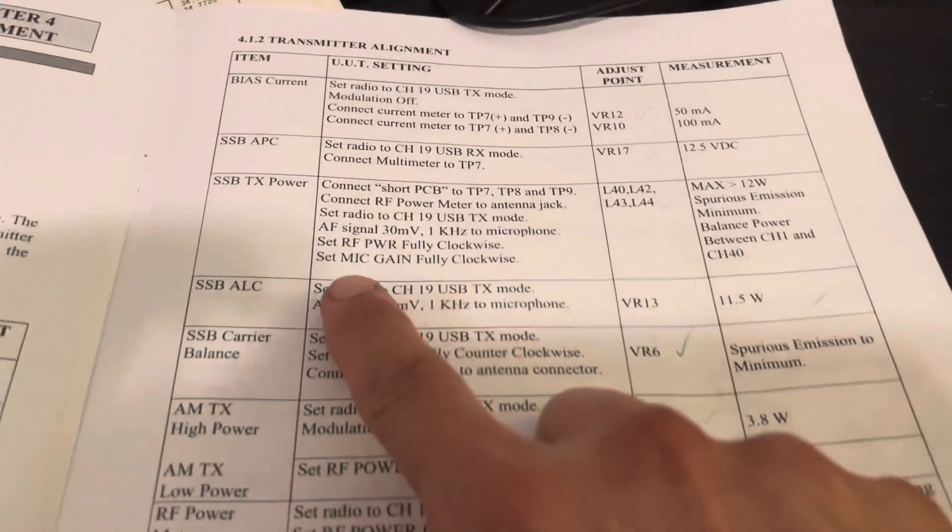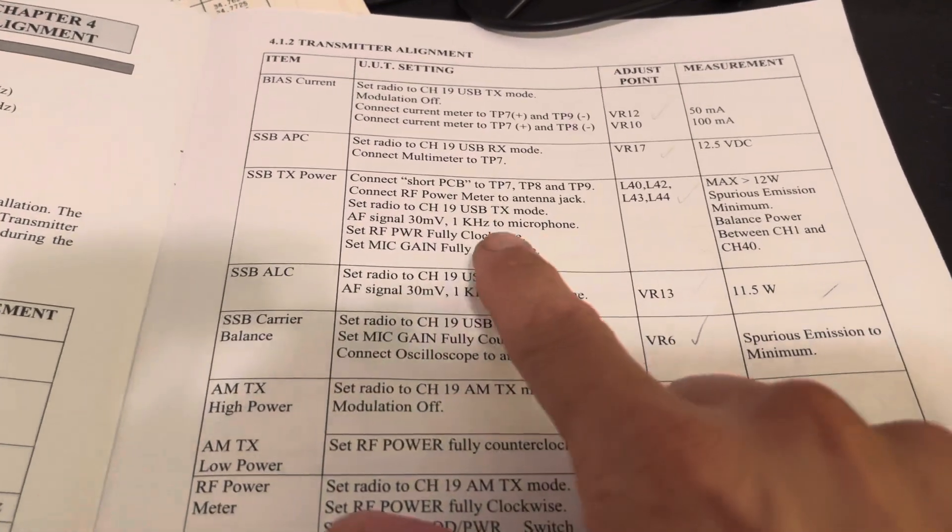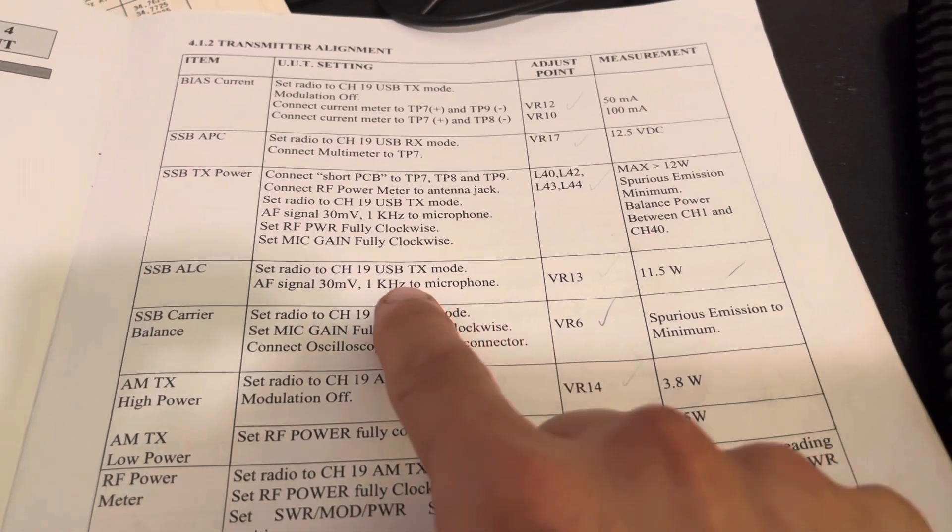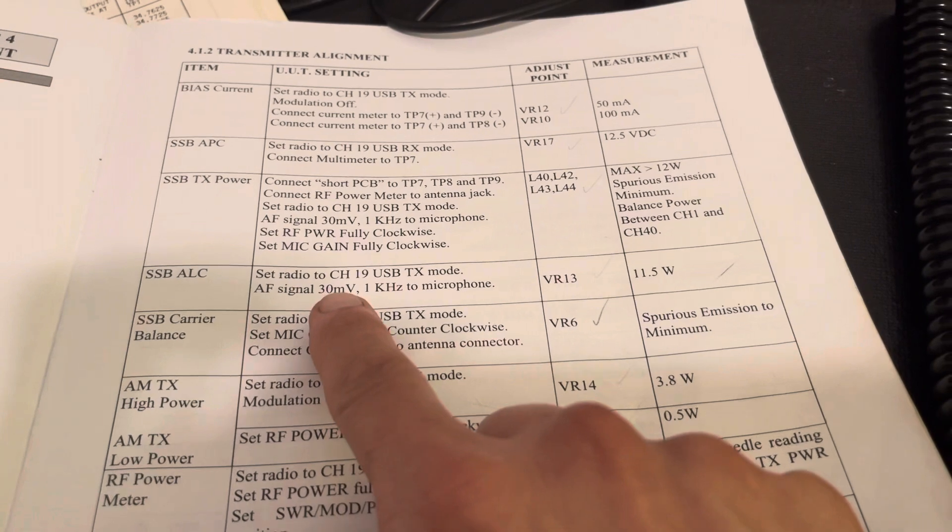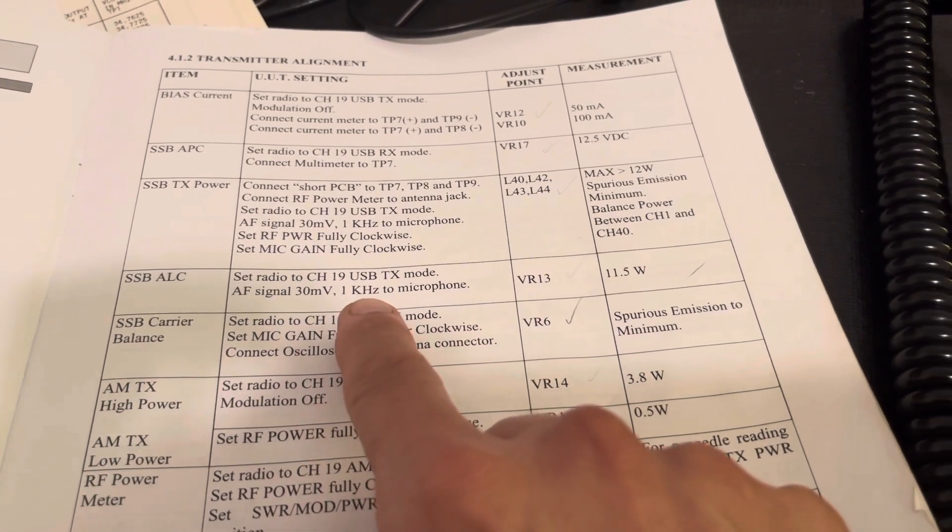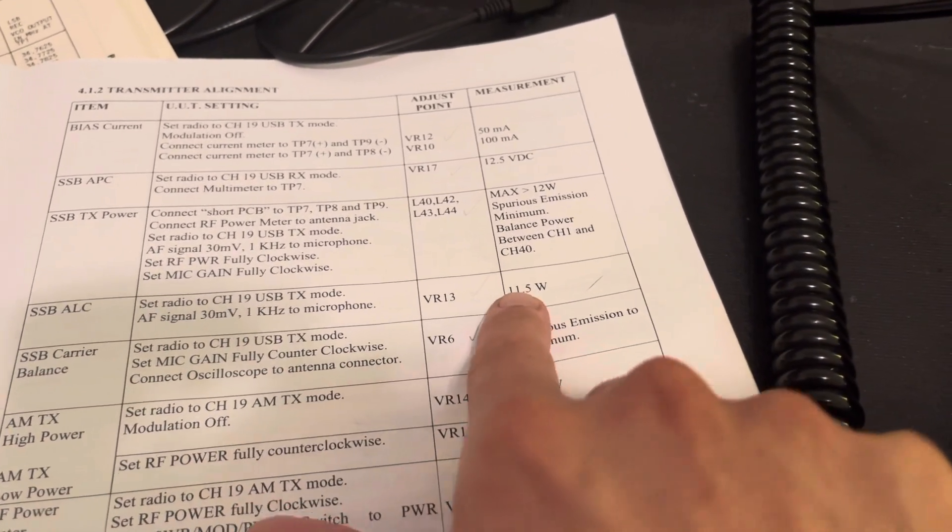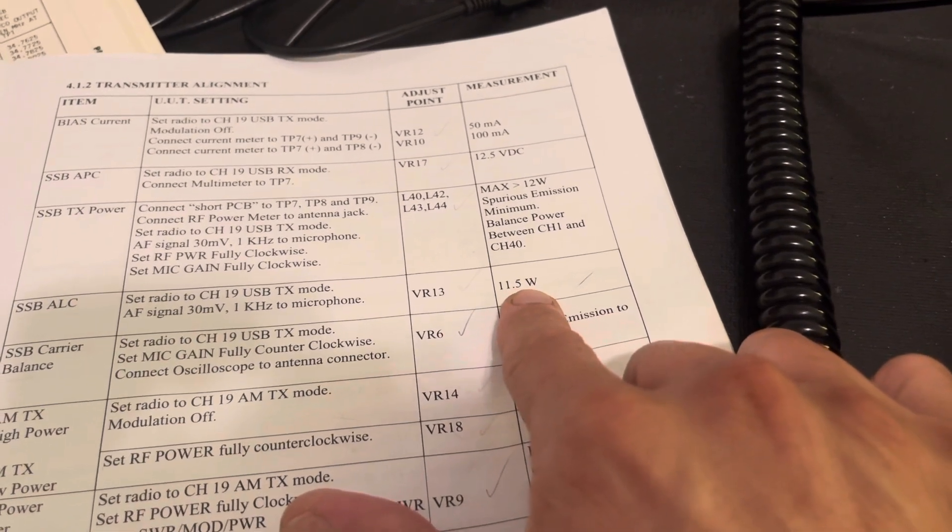Under the SSB ALC here, channel 19 upper sideband transmit mode, your input signal is 30 millivolts at 1 kilohertz, and it's saying to get 11.5 watts.